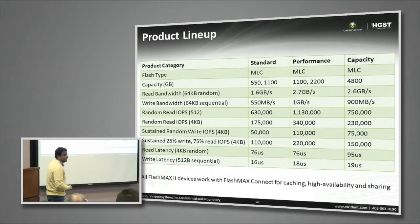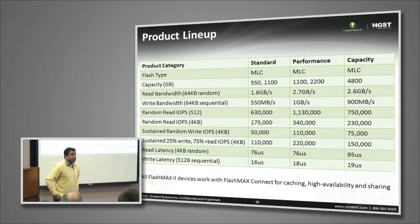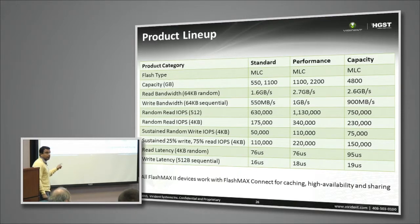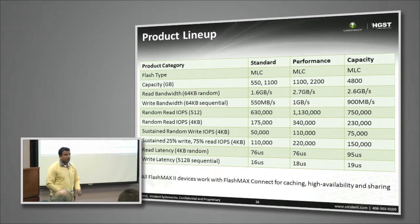Here is the product line. We have capacities from 550 GB to 4.8 TB, which is the highest in the industry in small form factor devices. No company has achieved 4.8 TB capacity in a low-profile form factor. Performance is 2.5+ Gbps reads and approximately 1 to 1.1 Gbps write speeds.